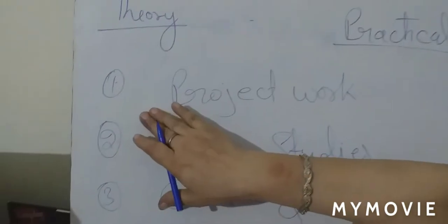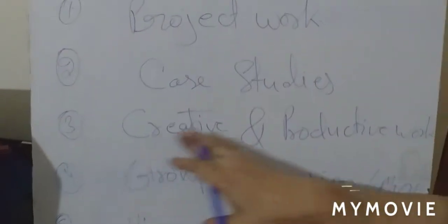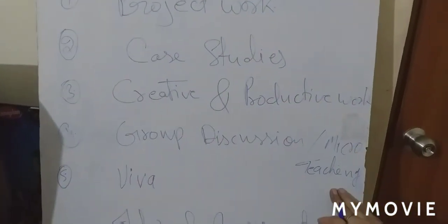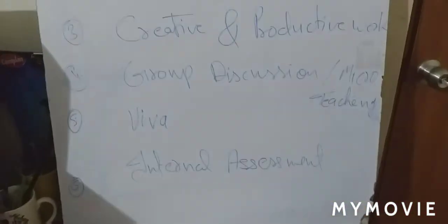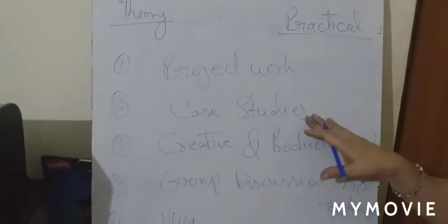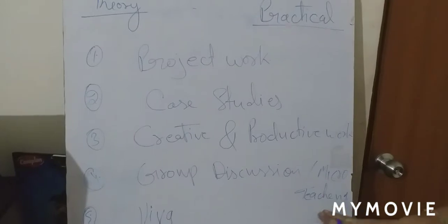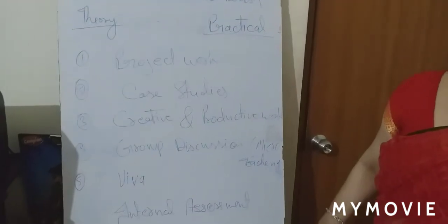Ab baat karte hain practical ki. Iske bhi six parts hain. First hai project work, second hai case studies, third hai creative and productive work, fourth hai group discussion and micro teaching, fifth hai viva, sixth hai internal assessment. Ismein project work, case studies, creative and productive work, aur group discussion and micro teaching 100-100 marks ke hain, aur viva aur internal assessment 50-50 marks ka hai.